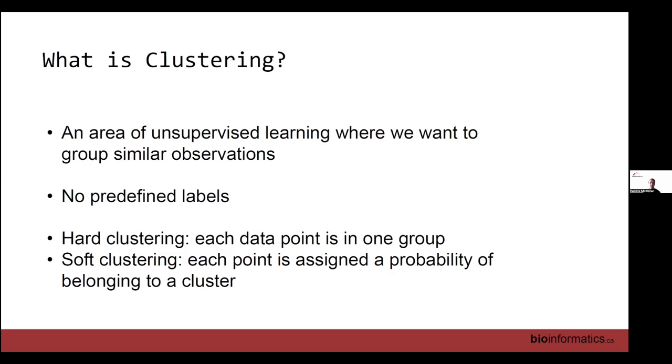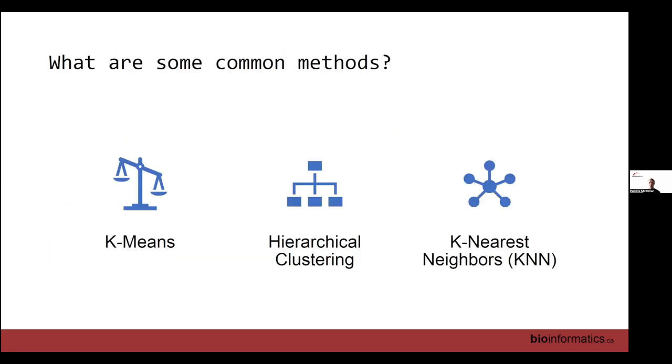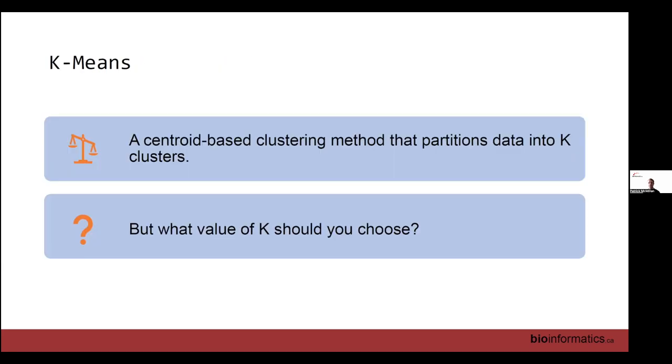What are some common methods? The ones we'll be going over are K-means, hierarchical clustering, and K nearest neighbors. K nearest neighbors is also a classification method and mostly used for classification, but you can also use it for clustering. I'm trying to have it do double duty, only introduce it once, and hopefully you can use it in both scenarios.